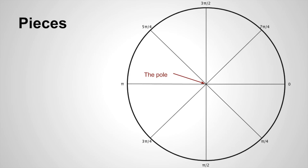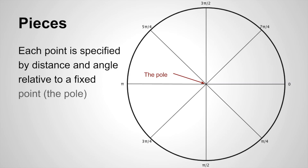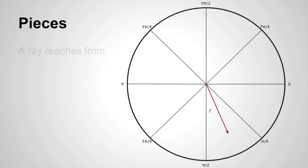First of all, we have this concept of the pole. Each point is specified by the distance and angle relative to a fixed point, which is the pole. For our purposes, we're going to imagine that the pole is the center of the clock. Then from there we have the idea of a ray. A ray reaches out from the pole to the point we're trying to specify.